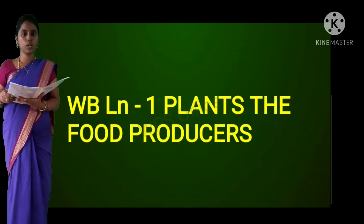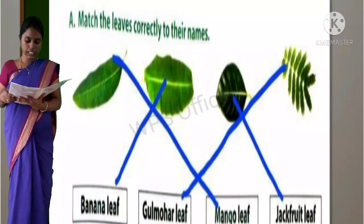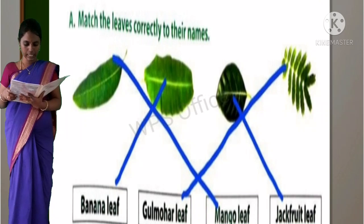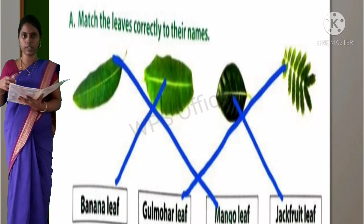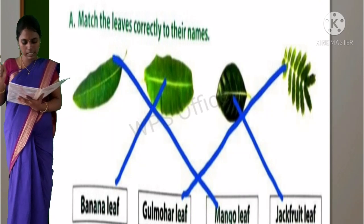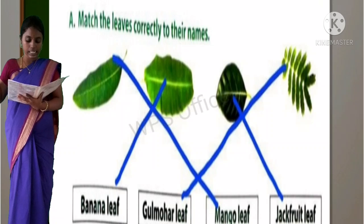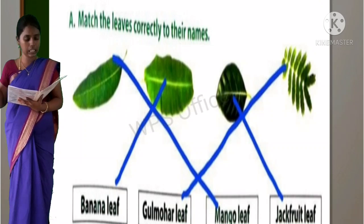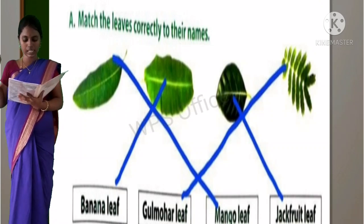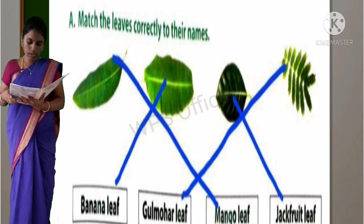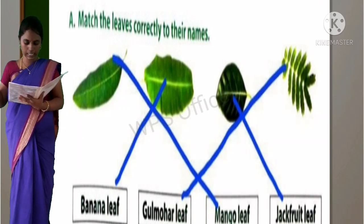Worksheet 1: Match the leaves correctly to their names. Four leaves are given, and names are also given. You are going to match the leaf to their parts - petal, sepal, receptacle (R-E-C-E-P-T-A-C-L-E). Fourth one is Gulmohar.